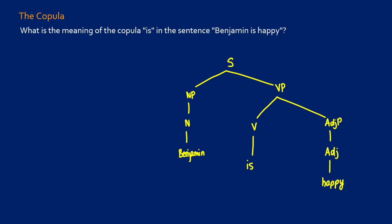We're going to take a look at how to do the copula with adjectives and prepositional phrases using the functional approach in semantics. We can ask ourselves: what is the meaning of the copula 'is' in the sentence 'Benjamin is happy'? In terms of what it's doing and meaning, it's kind of doing an equals relationship — it's saying that Benjamin equals happy, that Benjamin has the property of being happy.